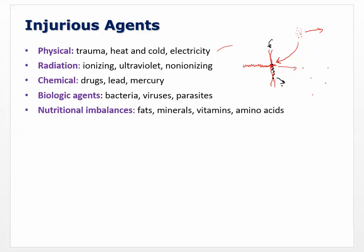Chemical agents include drugs, lead, and mercury. Biological agents — bacteria, viruses, and parasites — cause cell injury. Nutritional imbalances — too much or not enough fats, minerals, vitamins, or amino acids — can cause cell injury. The single most common cause of cellular injury is hypoxic injury: reduced oxygen to the tissues. Results from reduced oxygen in the air, loss of hemoglobin or decreased hemoglobin efficacy (certain anemias), decreased red blood cell production, or diseases of the respiratory and cardiovascular systems.